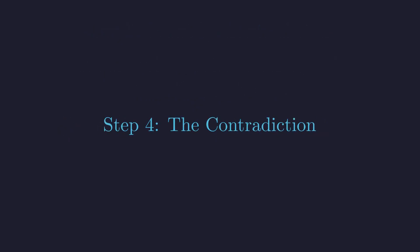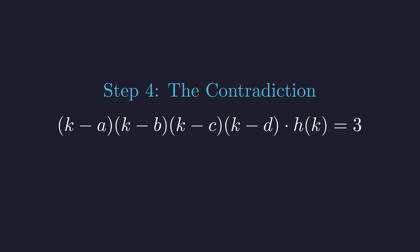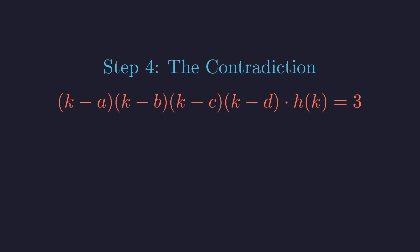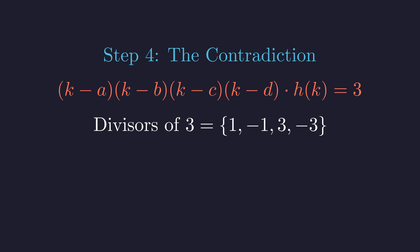Here's where the integer constraints are about to box us into a corner. We have five integers multiplied together, and their product is 3. Now, if integers multiply to give 3, what does that tell us about each individual integer? They must all be divisors of 3. So what are the divisors of 3? The only possibilities are 1, negative 1, 3, and negative 3.